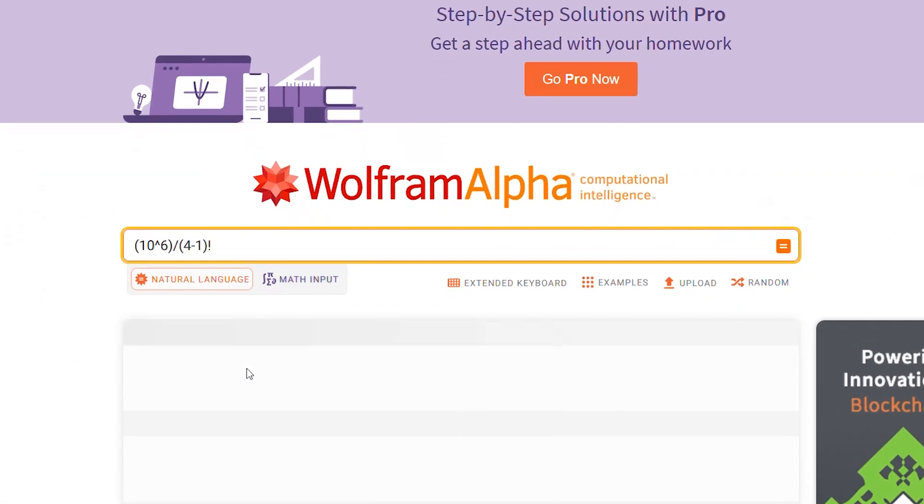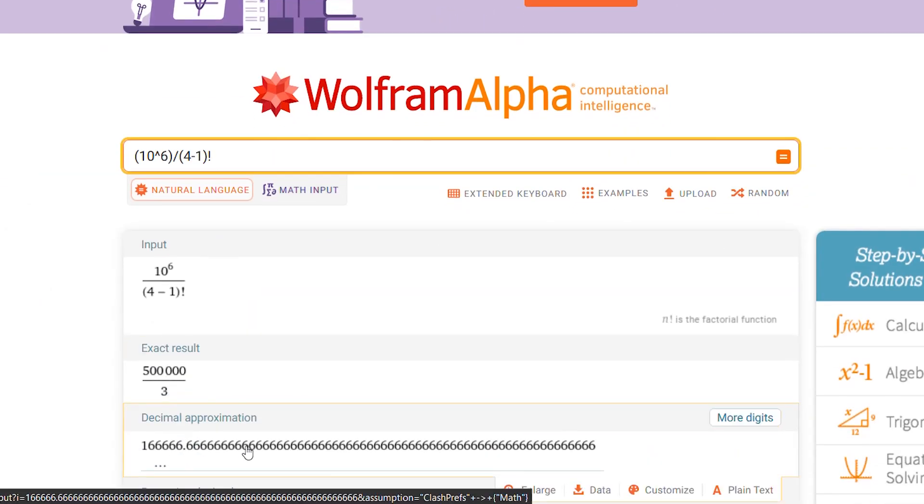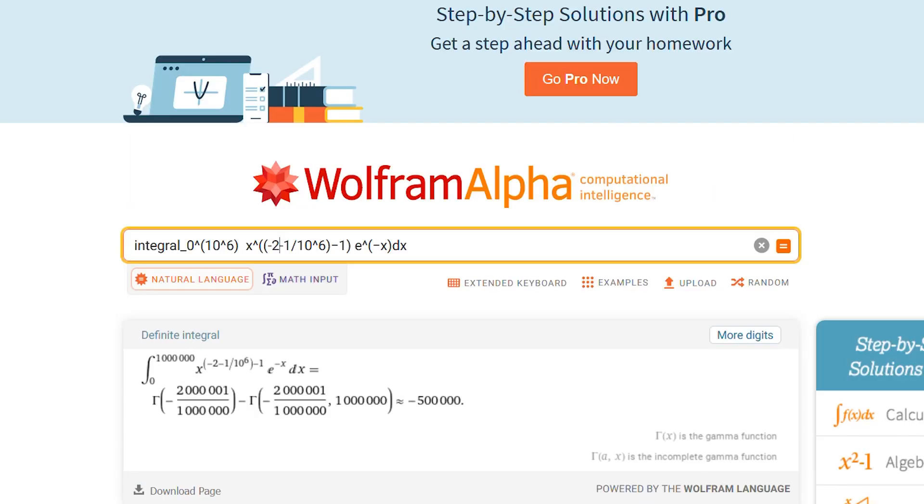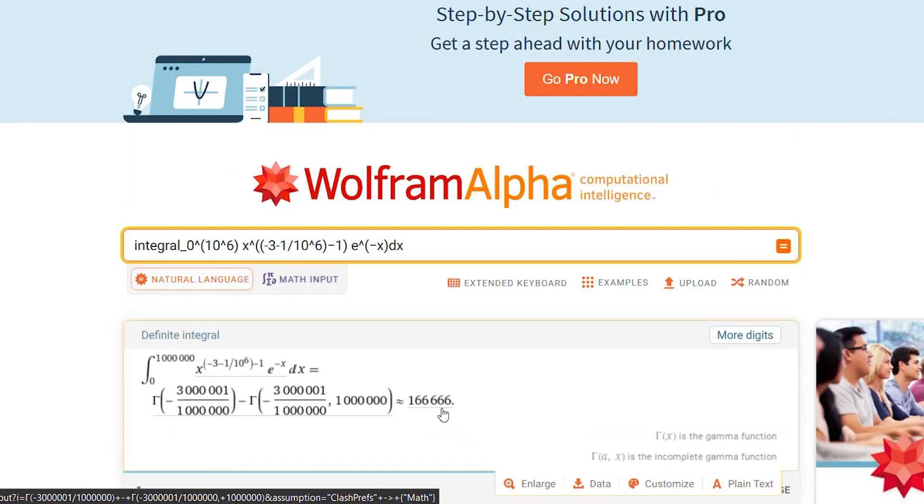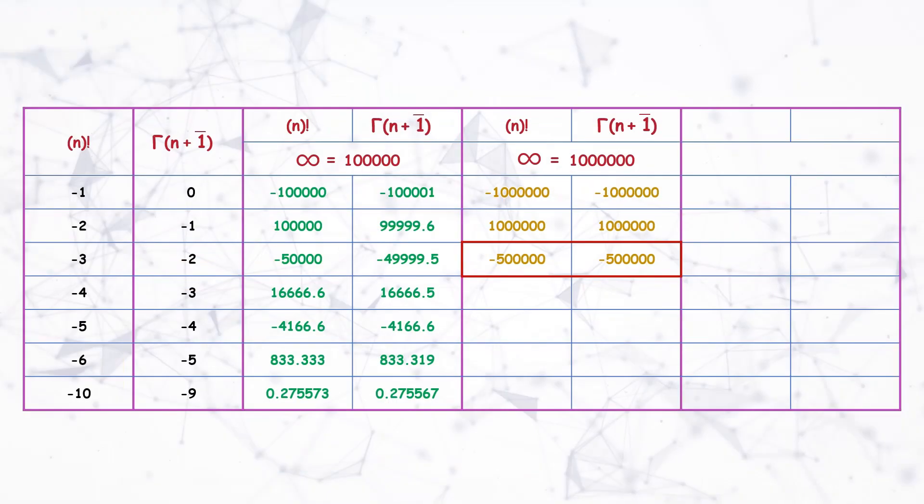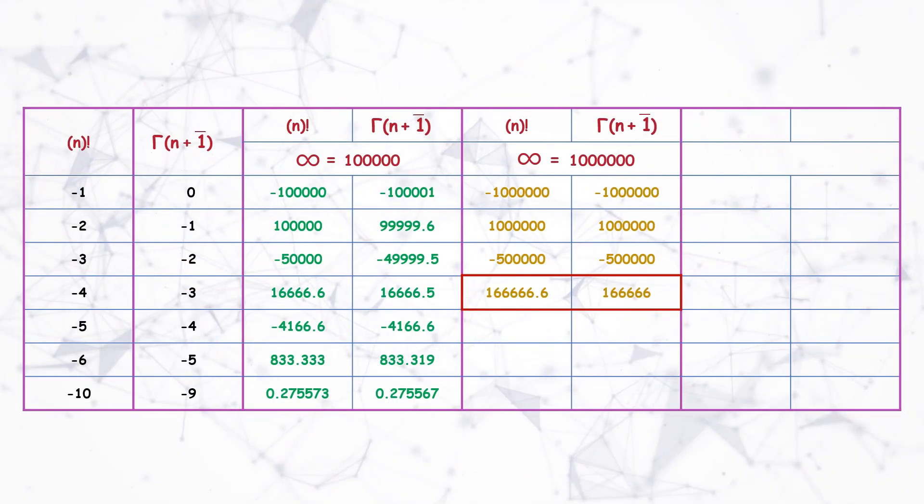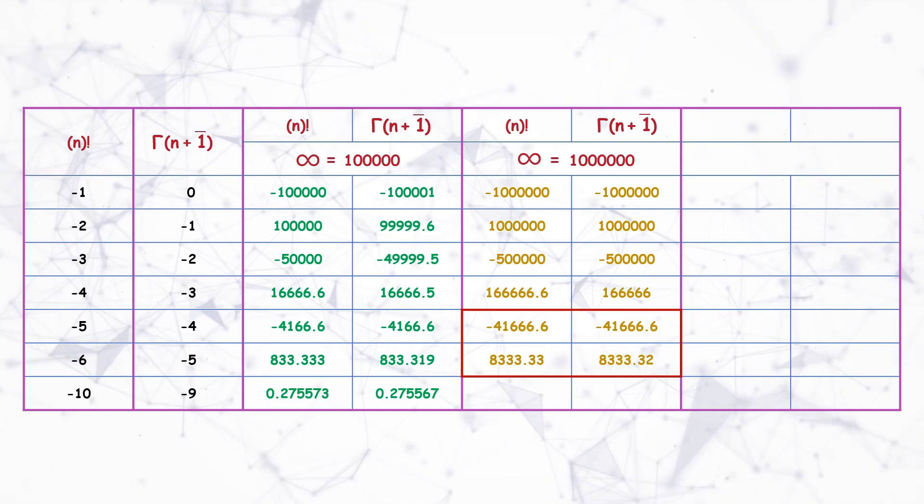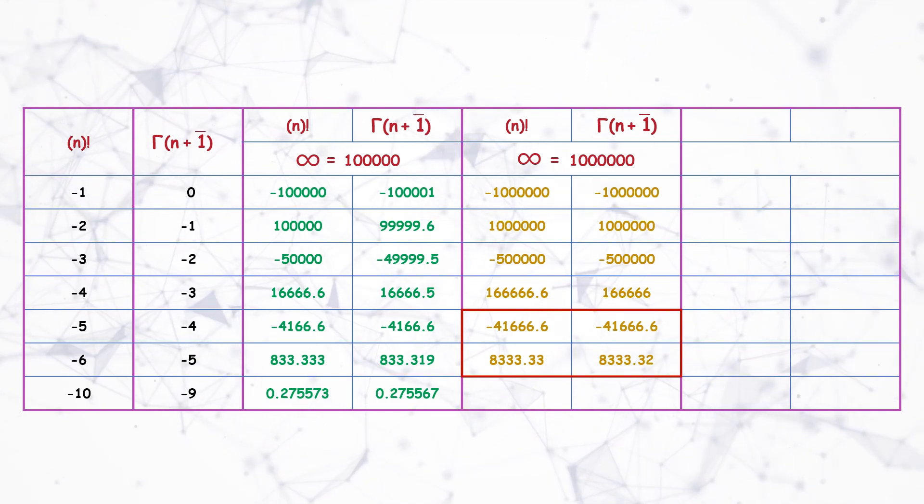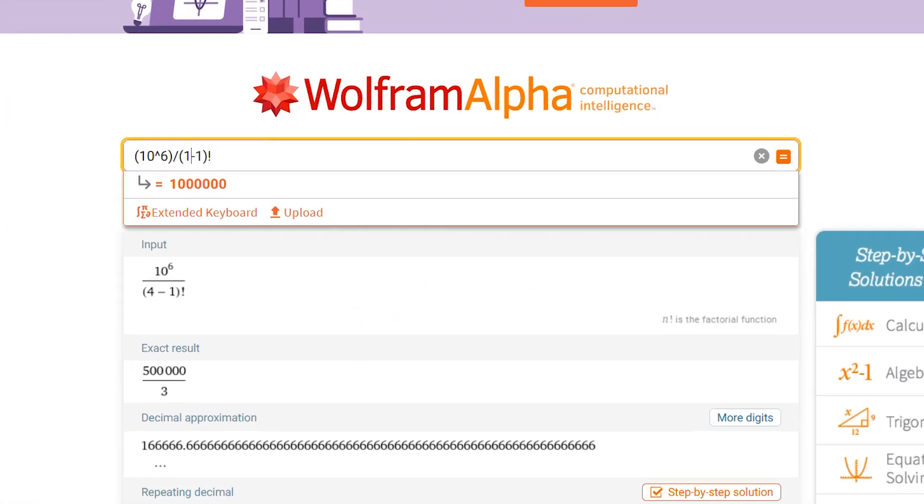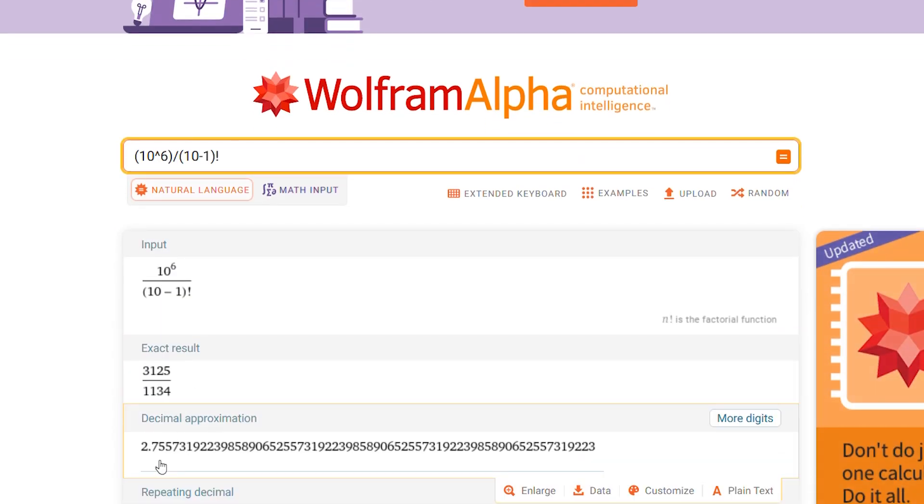Minus 4 factorial is 166666.6 and gamma 3 is also 166666.6. Now directly we will check for negative 10 factorial. So negative 10 factorial is 2.7557.